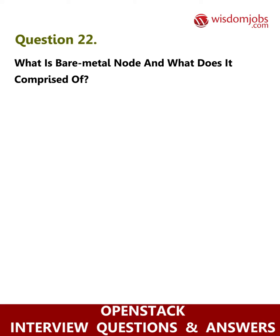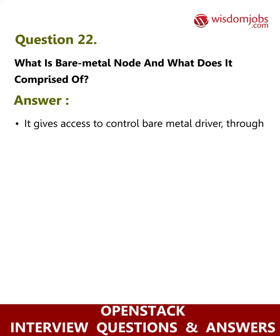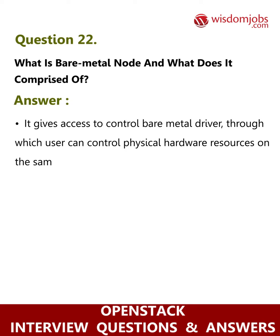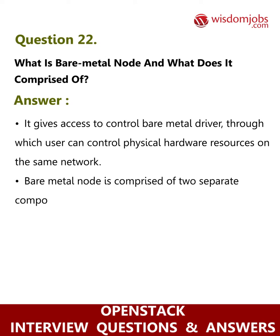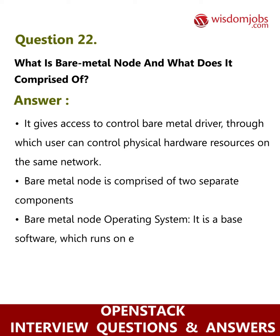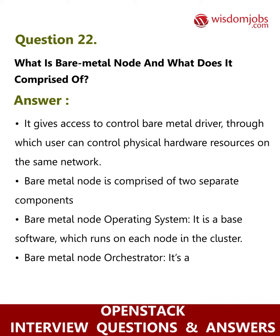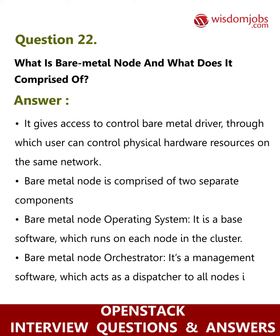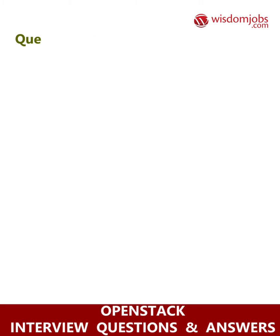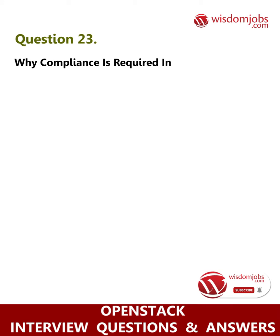Question 22: What is a bare metal node and what does it comprise of? Answer: It gives access to control a bare metal driver through which users can control physical hardware resources on the same network. A bare metal node is comprised of two separate components: the bare metal node operating system, which is the base software that runs on each node in the cluster, and the bare metal node orchestrator, which is management software that acts as a dispatcher to all nodes in the cluster.